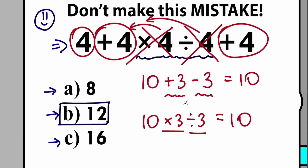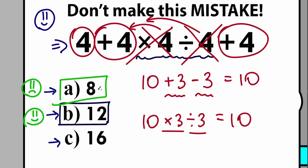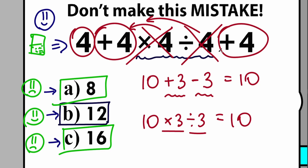This trick will definitely help you in your algebra adventures. If you chose 12 as the correct answer, you can be proud of yourself. If you chose 8, you need to review your basic math — that's a wrong answer under any order of operations. And 16 is also absolutely wrong. According to PEMDAS and BODMAS, and verified by any calculator or internet resource, the correct answer is 12 in 99% of cases.